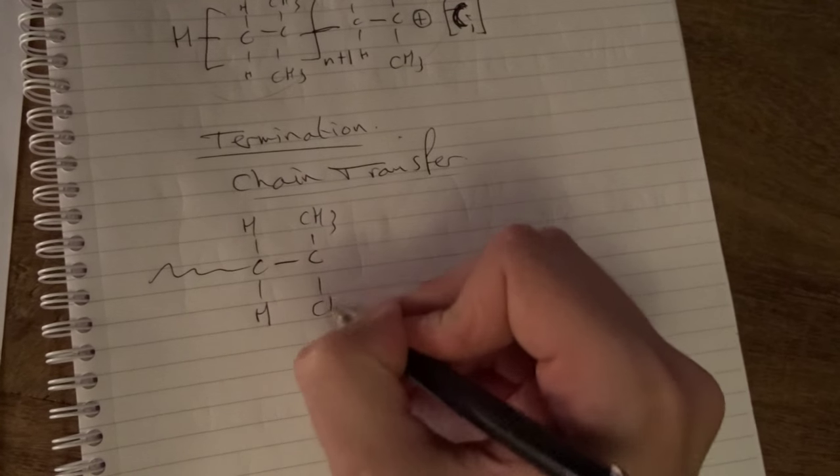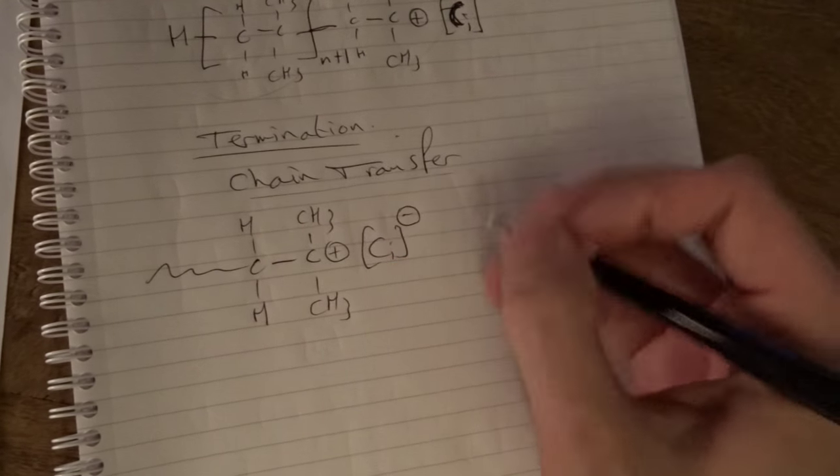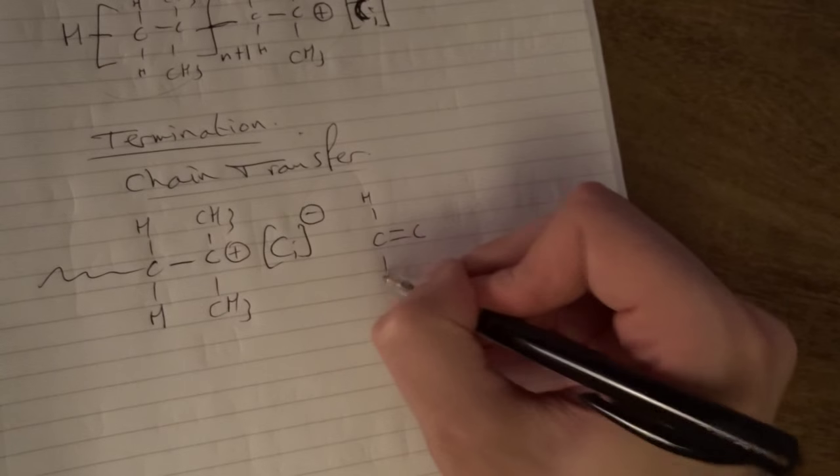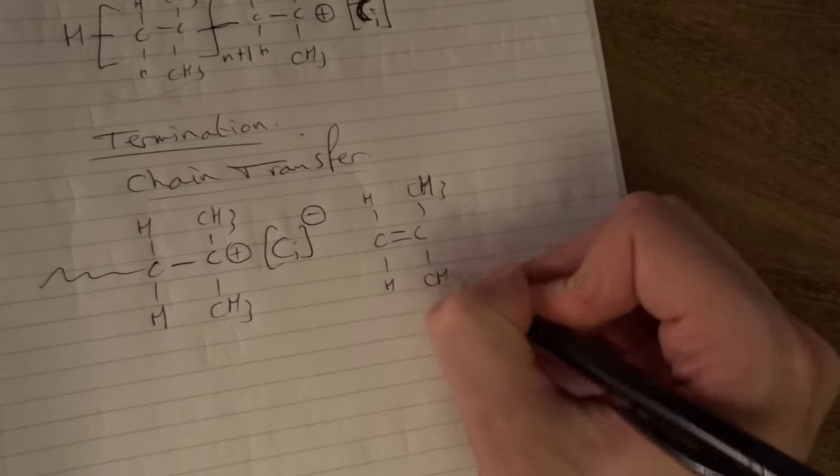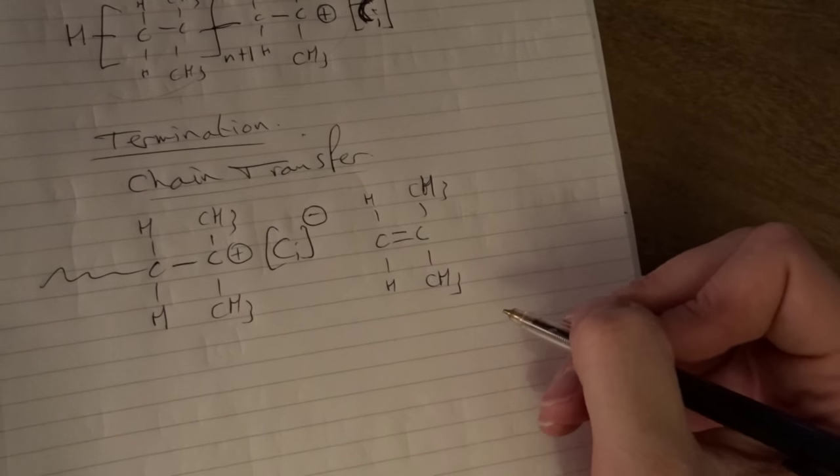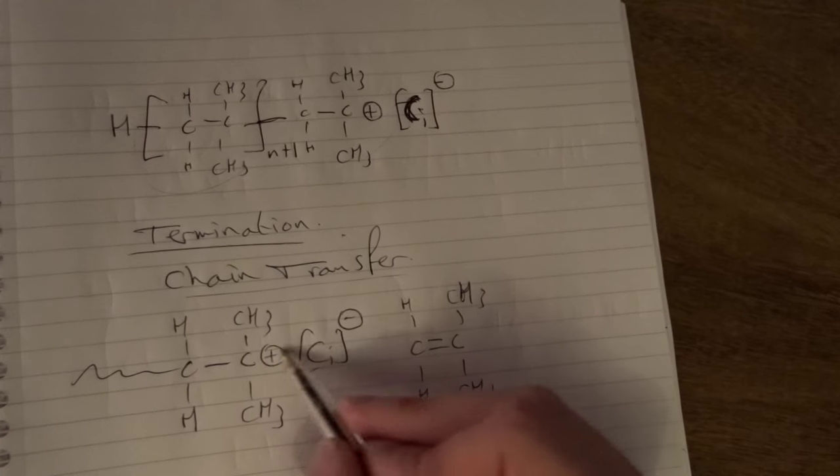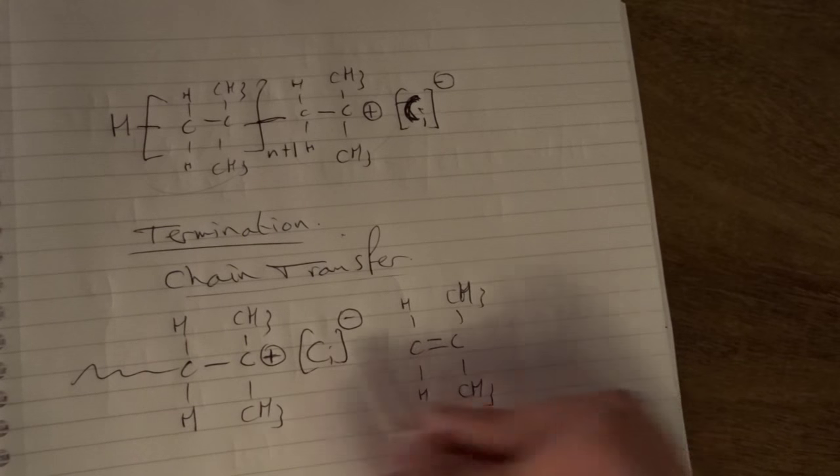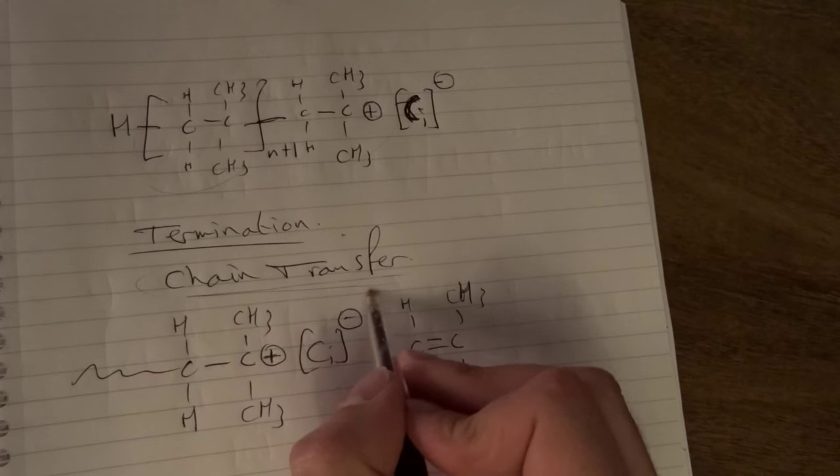The chain end, say it's three, plus with the counter ion negative charge. For the chain transfer we just use another monomer. This is a little bit strange because it looks like exactly the same as in the propagation step, but something else will be taking place. Because instead the counter ion, the positive charge and the reactive bond here, what normally react in the propagation step, is not taking place when we talk about chain transfer.